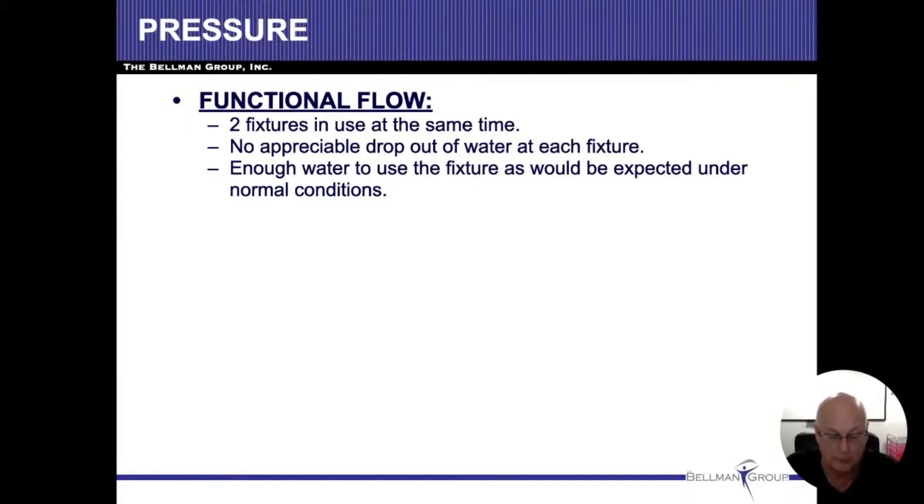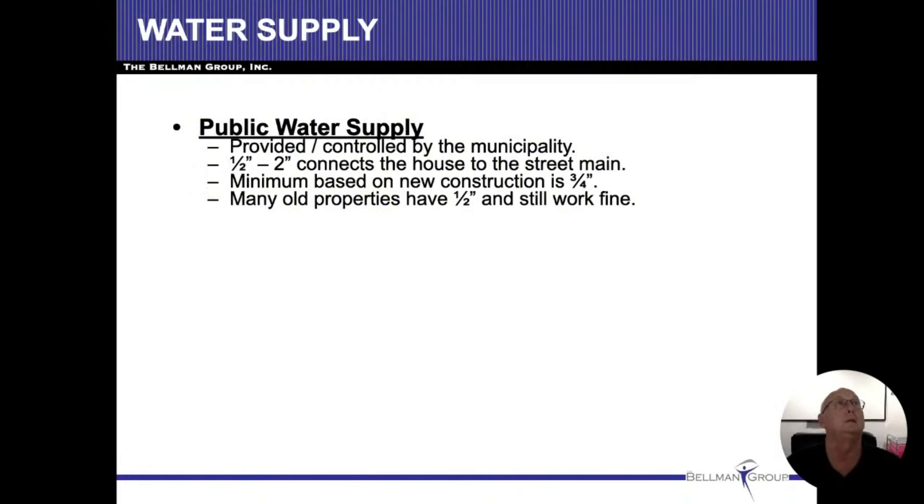Repiping houses isn't really a cheap thing to do, and it's not saying that we have to be responsible for it. But at this point in time, I really feel that I should have done it a different way. So functional flow: two fixtures in the same room in use at the same time without any sort of significant drop from either one of these things.